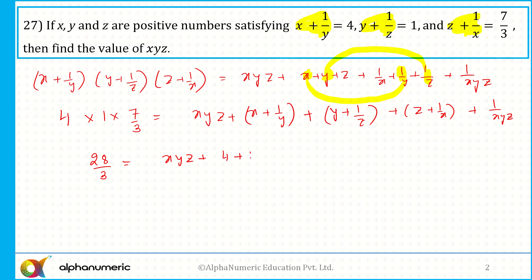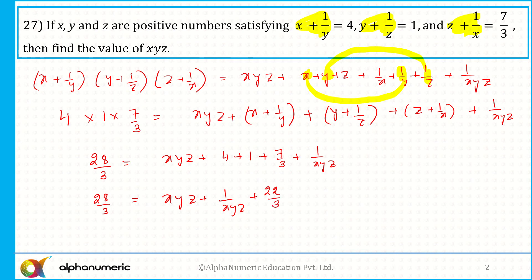So the left-hand side equals xyz plus x plus 1 by y, that is 4 given to us, plus y plus 1 by z which is equal to 1, and z plus 1 by x which is equal to 7 by 3, plus 1 upon xyz. So 28 by 3 equals xyz plus 1/(xyz) plus 4 plus 1 = 5, and 5 plus 7 by 3 equals 22 by 3. So xyz plus 1/(xyz) equals 28/3 minus 22/3, which equals 2.